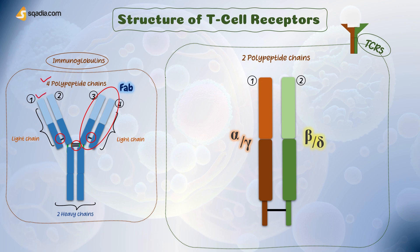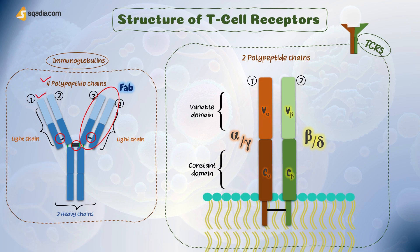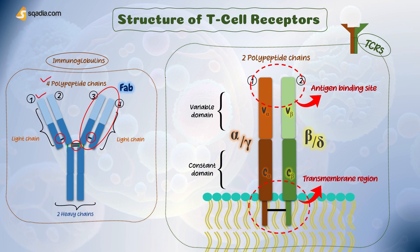Just like the light chain of immunoglobulin, each chain in TCR has one variable domain with variable amino acid sequences, presenting as V-alpha and V-beta, and one constant domain with similar amino acid sequences, presenting as C-alpha and C-beta. The TCR domains farthest from the membrane are similar to immunoglobulin variable region domains, and the domains closest to the membrane are similar to immunoglobulin constant region domains. The antigen binds to a site created by the variable domains of the alpha-beta or gamma-delta chains. Unlike antibody, the variable domains of TCRs form only one antigen binding site. The other side of the TCR molecule, with constant domain, is embedded in the membrane of the T-cell, named the transmembrane region of TCRs.